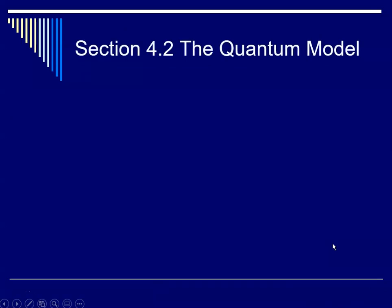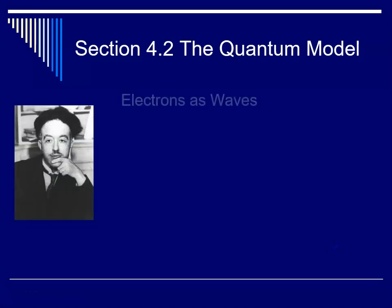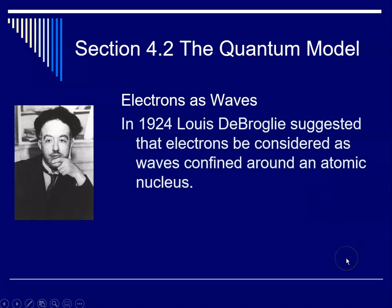So now we can start talking a little bit more about how this relates to the quantum model. So this fellow, Louis de Broglie, who I think also received a Nobel Prize, said that we can treat electrons as waves. We can treat them as waves that are confined around an atomic nucleus. And he proposed this in 1924.